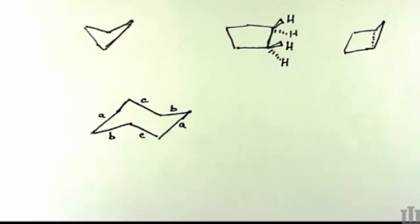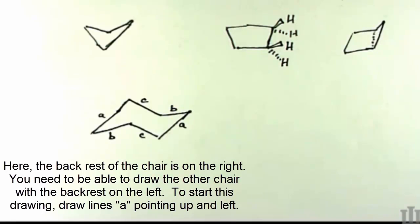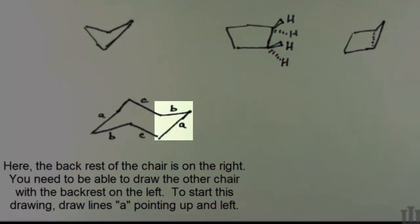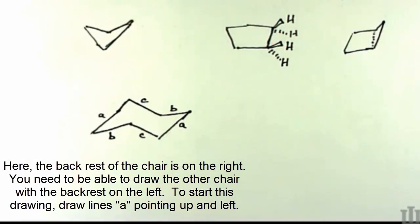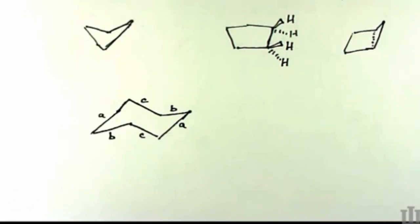So you need to be able to draw the chair, and you need to be able to draw it pointed both directions, tipped so the left atom is down or the left atom is up. But you also need to be able to put the bonds to all of the carbons on as well.